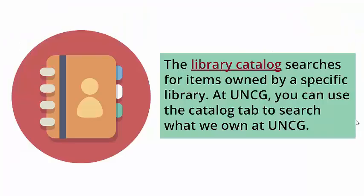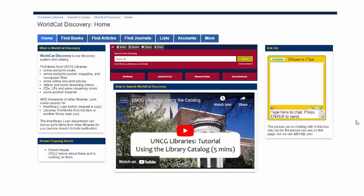The catalog searches for items owned by a specific library. At UNCG, you can use the catalog tab to search what we own. The library catalog is the red box located on the library homepage. There's an extensive guide on our library catalog that you can check out by clicking on the links in the description of this video.